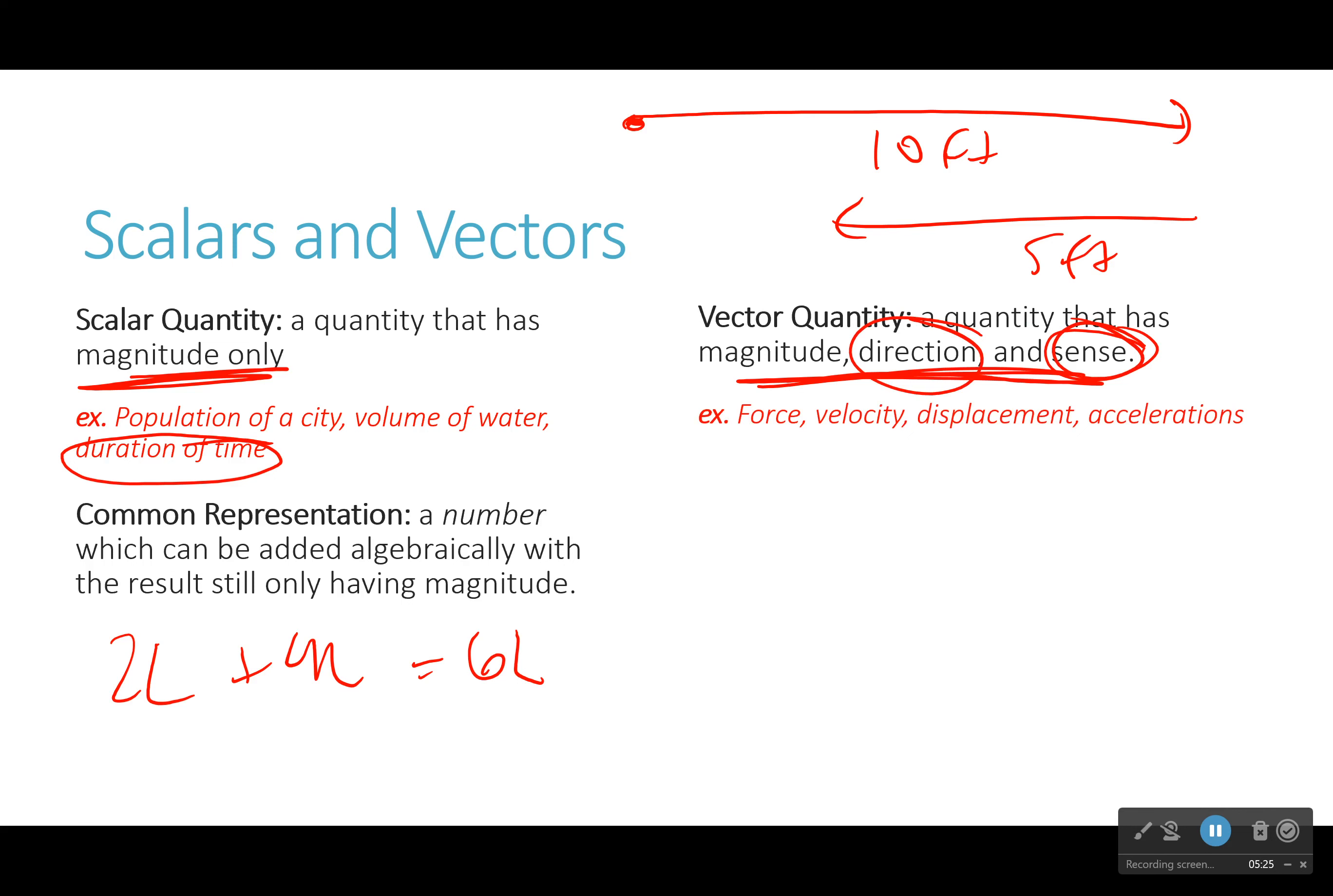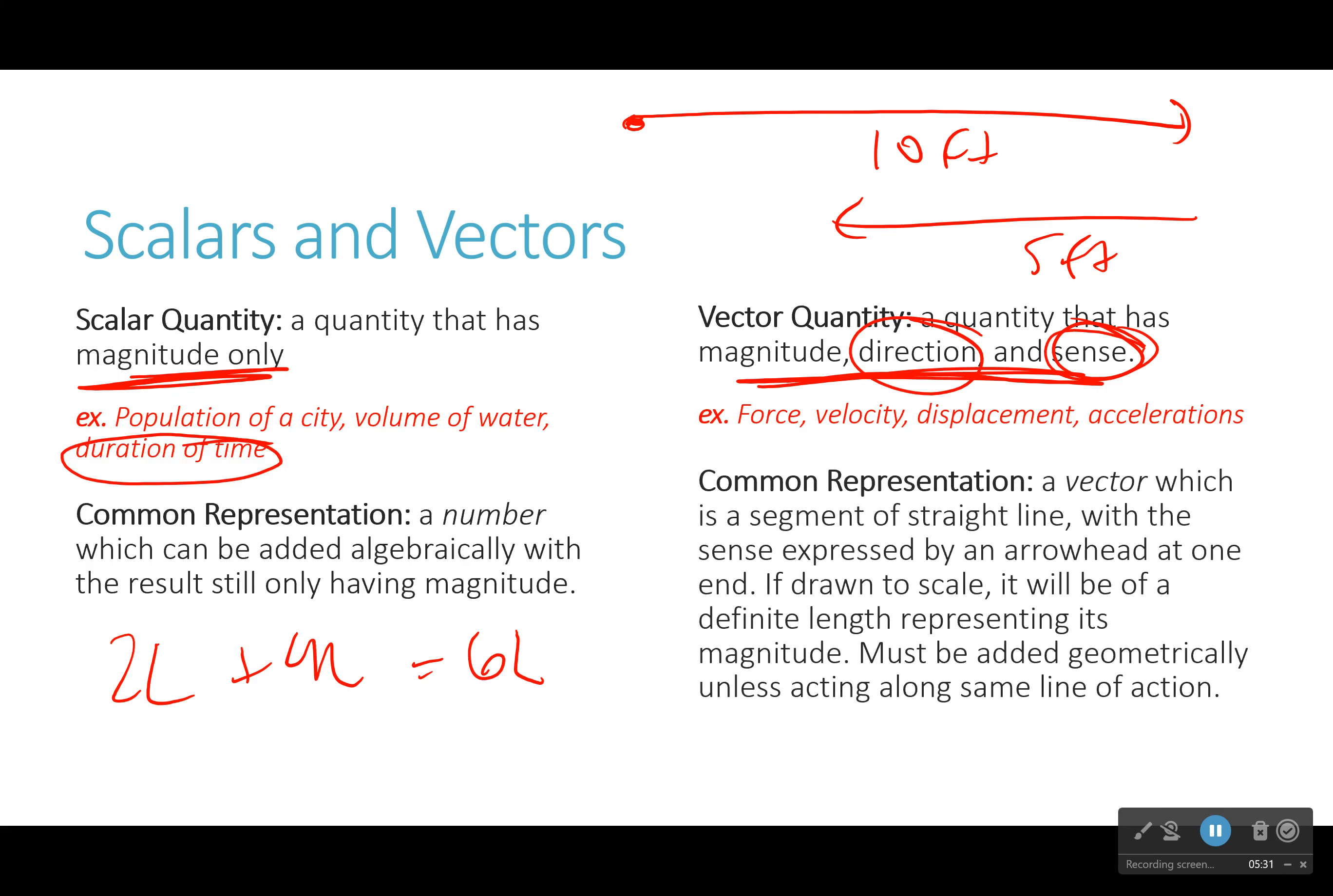So force, velocity, displacement, acceleration, those are all vectors. And force is the one we're going to be dealing with the most. Now, a vector is typically a segment of a straight line. It's usually shown with an arrow. And if it's drawn to scale, then you can find the magnitude by the length of that arrow.